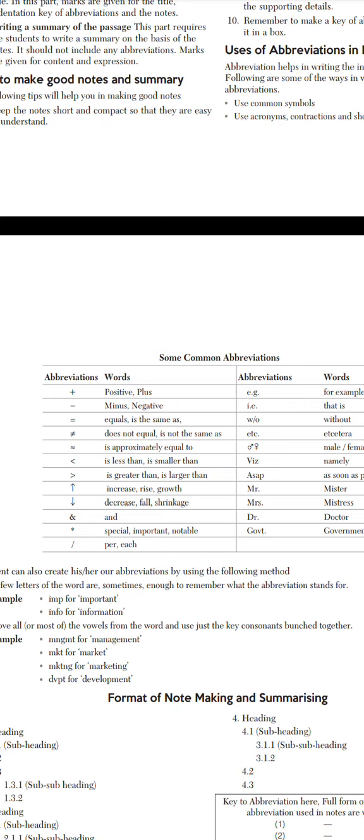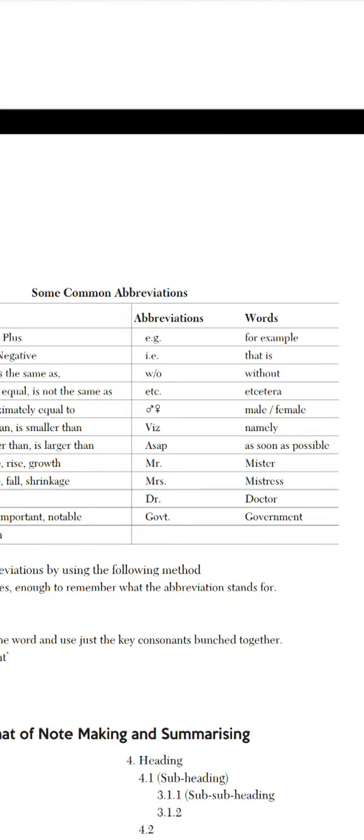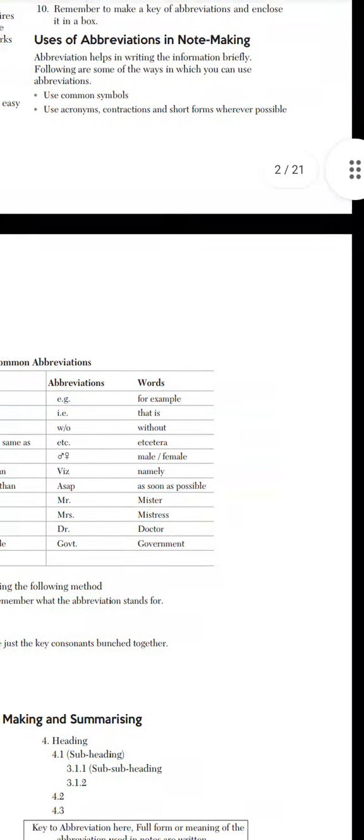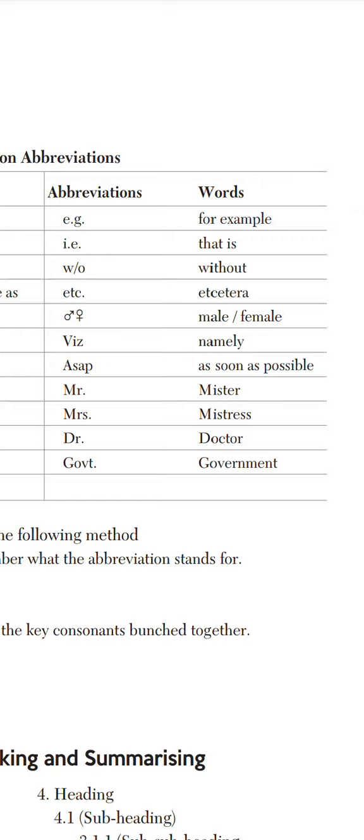A positive sign can be used to represent the word positive. If we put a sign instead of writing the whole word, it will represent it. This is abbreviation. For example, we write e.g. for 'for example', i.e. for 'that is', and ASAP is also used for 'as soon as possible'.